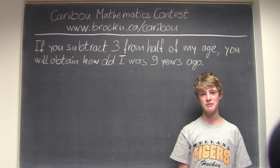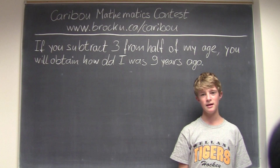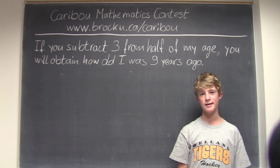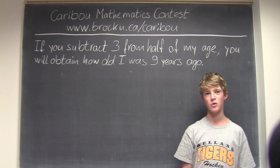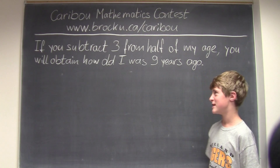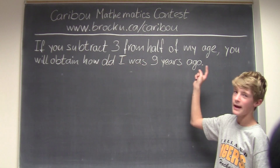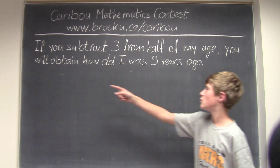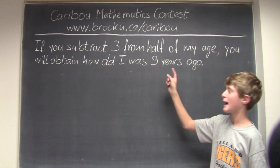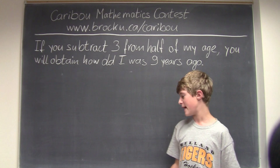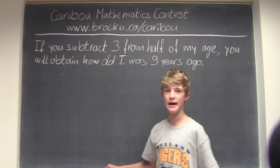This video is about the Carol Mathematics contest in Canada. I'm going to show the solution for the October 2011 Grade 7-8 contest, question 23. The question is: if you subtract 3 from half of my age, you will obtain how old I was 9 years ago. The variable for age will be A.